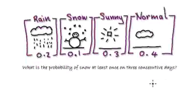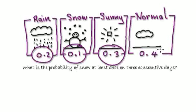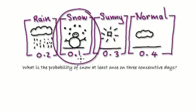Okay, see if you guys can work this out. Again, like in the previous video, the probability of it raining on any given day is 0.2. The probability of it snowing is 0.1. Of it being sunny, 0.3. And normal, 0.4. Let's say my niece likes the snow. What is the probability of it snowing at least once on three consecutive days?